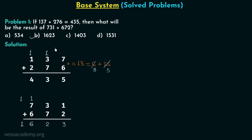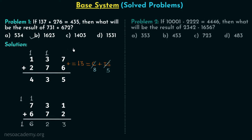We are done with problem number 1 and now we move on to problem number 2. If 10001 minus 22222 equals 4446, then what will be the result of 2342 minus 1656? The four options are: option A is 353, option B is 453, option C is 7223, and option D is 483.